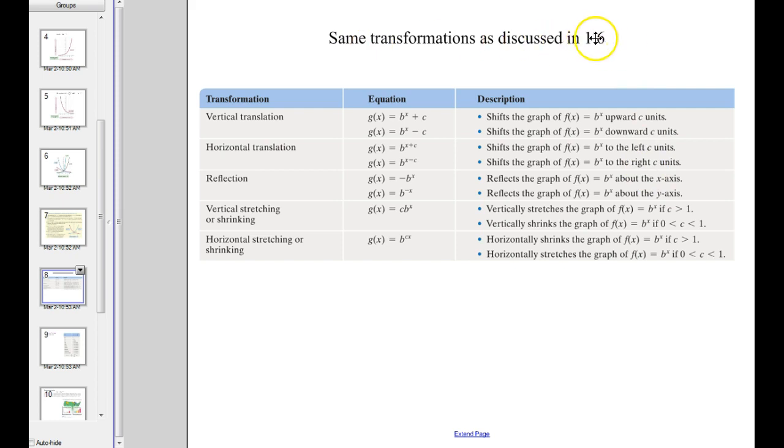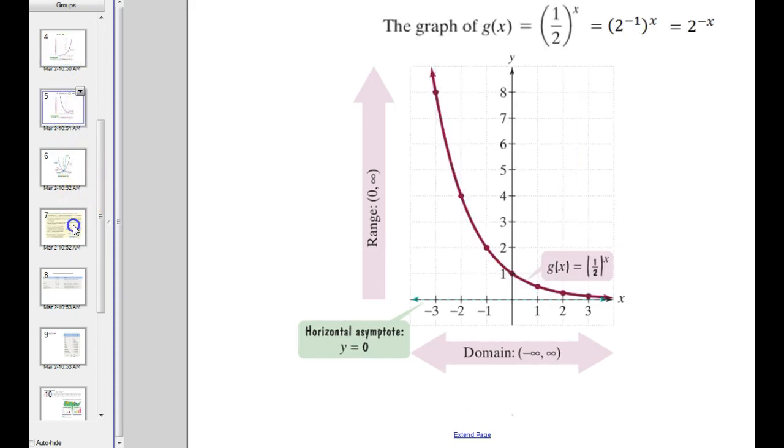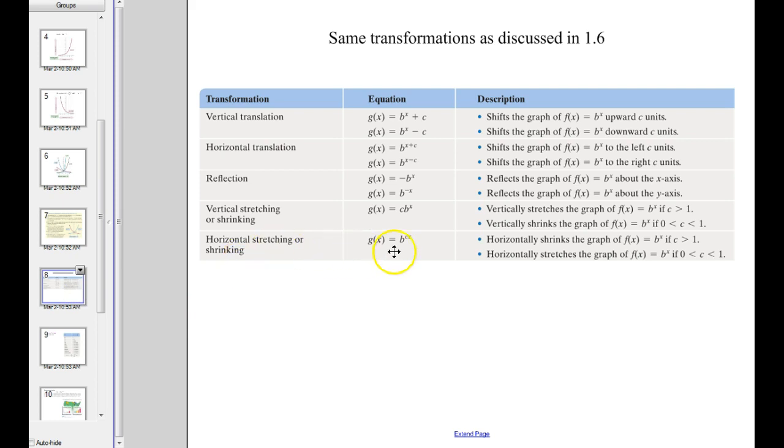All those transformations that we discussed, that functions do, that we talked about 1.6, all those transformations still hold, meaning that if we add something after we've done a base to a variable power, if we add after that, meaning it's not up in the exponent, it's afterwards, that's going to go up or down depending on the sign of that number. However, if we add or subtract in the exponent, inside where the variable is, then that's going to go left and right. The negatives, if the negative takes place after the x power, then that's going to be over the x-axis. If the negative happens to the input or to the x, then that's going to happen around the y-axis like we saw here, going around the y-axis.